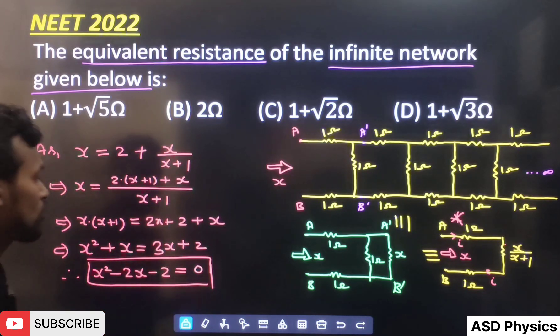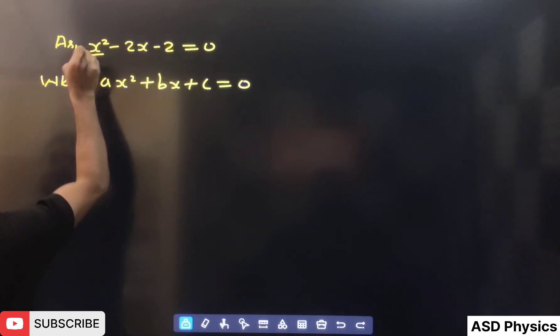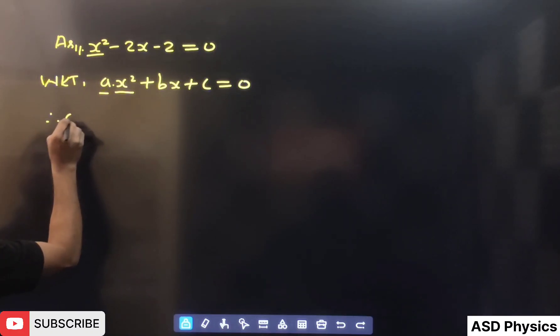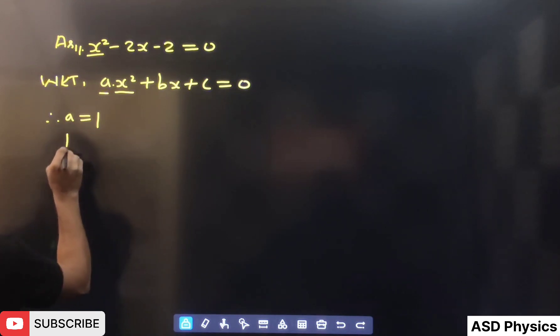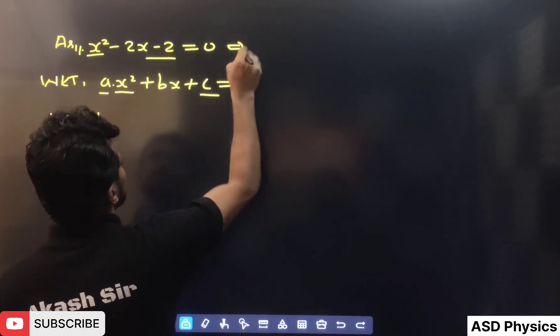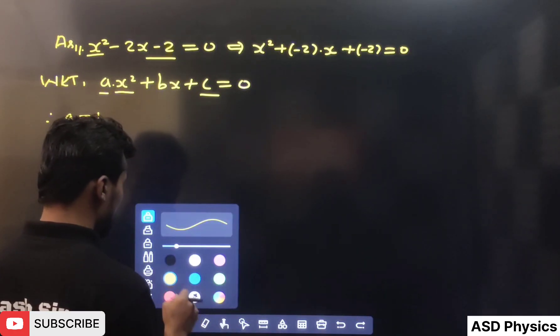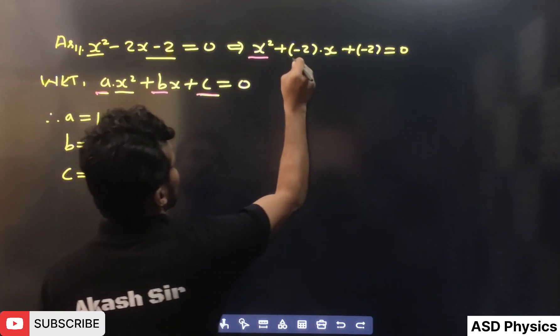We need to simplify this equation by comparing it with the standard quadratic equation AX² + BX + C = 0. Our equation is X² + (-2)X + (-2) = 0. Comparing: A = 1, B = -2, C = -2.